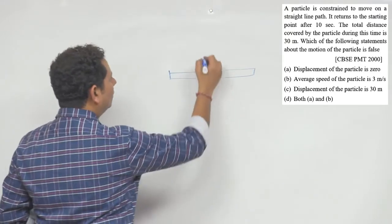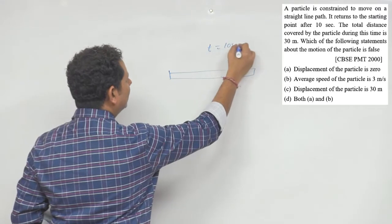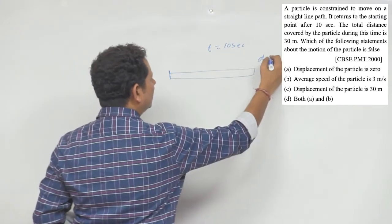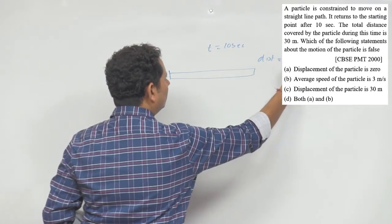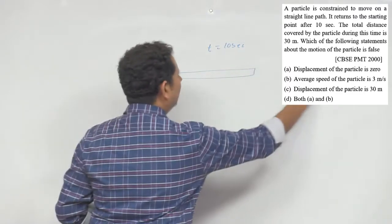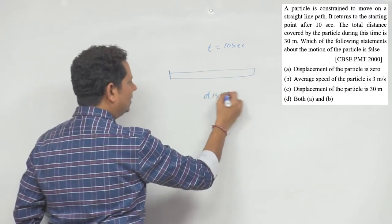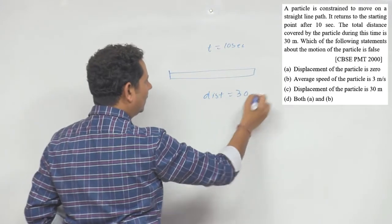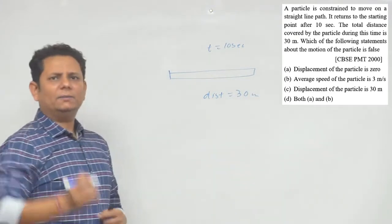Total time taken usne 10 second liya hai aur distance jo usne cover kiya hai that is equal to 30 meter. So distance is equal to 30 meter ho gaya.